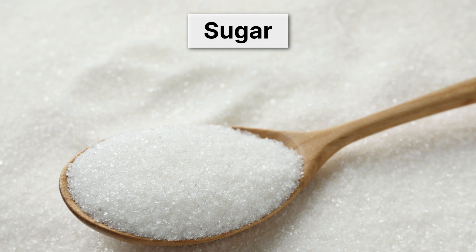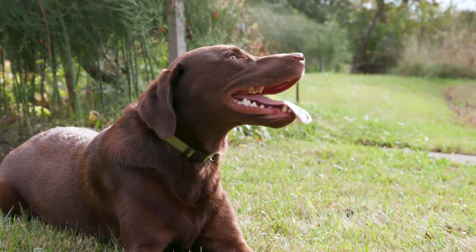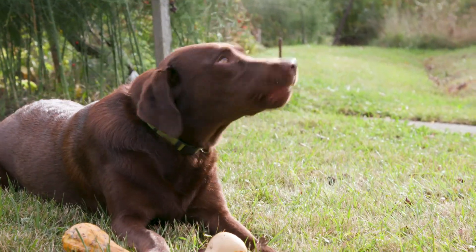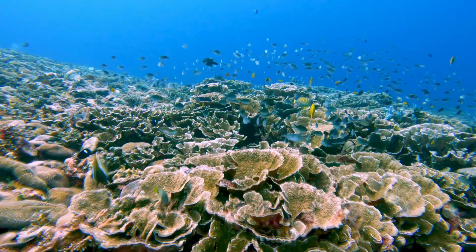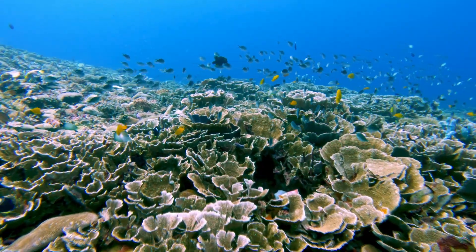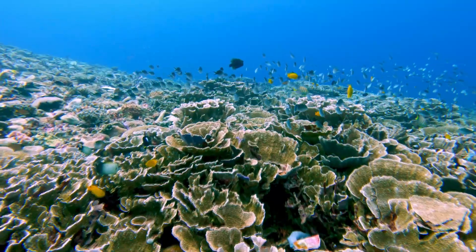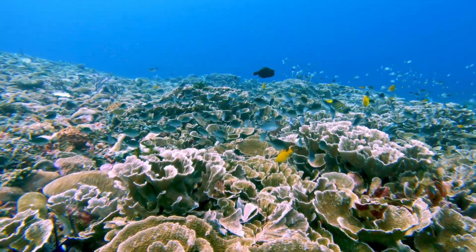Photosynthesis also makes oxygen — not sure if you've heard of that one, also pretty important. Oxygen can be stored in these green gas cylinders that you see here, but oxygen courses through our entire atmosphere, supporting endless varieties of life, like our pets. This oxygen dissolves in the oceans, which are teeming with life, where the gills of sea creatures extract oxygen from the water.